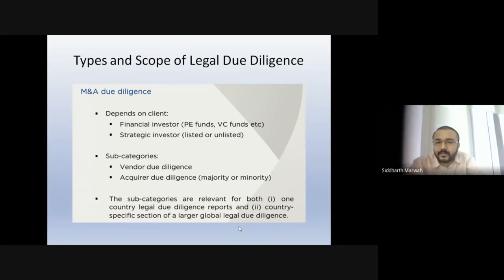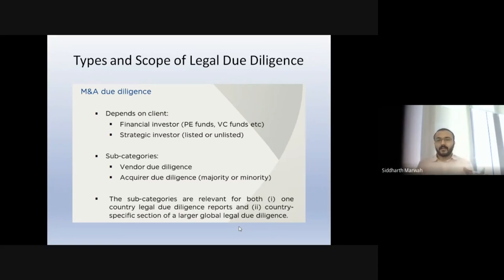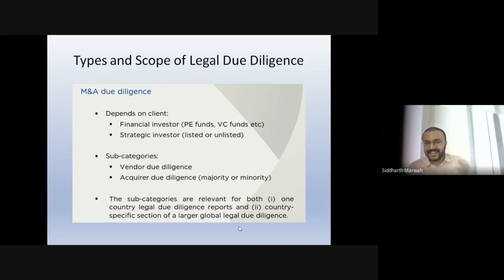Acquirer due diligence is when the buyer asks you to do a due diligence on the target — that's typically what you mostly do. The scope depends on whether it's a majority or minority investment. For majority, you want a much more detailed report; for minority, you're fine knowing just the big-ticket items. Subcategories include one-country legal due diligence reports and country-specific sections of a larger global diligence. We get a lot of this work from foreign law firms, especially for IT/ITES companies that have wholly owned subsidiaries in India acting as back-end offices.